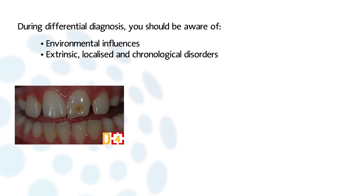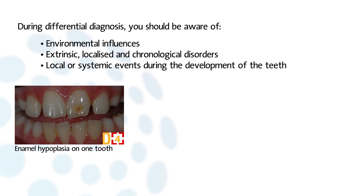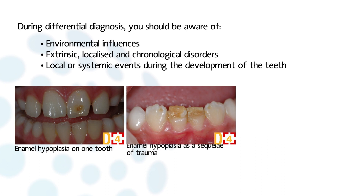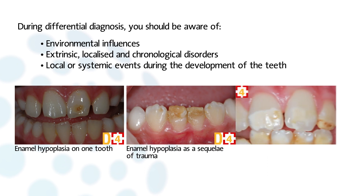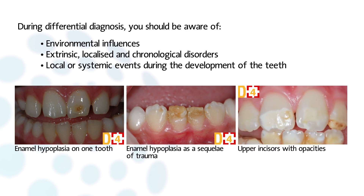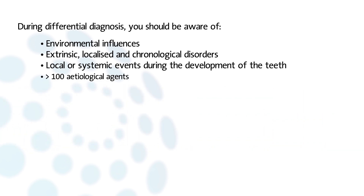Any local or systemic event during the development of teeth may result in some dental anomaly. One tooth or more teeth are affected, and the enamel could be reduced in quantity or in quality or both. According to the clinical appearance, we distinguish discoloration, opacity, and hypoplasia. More than 100 etiological agents, including endocrine disruptors and fluoride, have been reported to cause developmental defects of enamel.